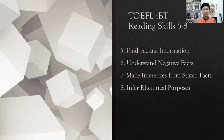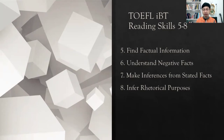Reading skill seven is making inferences from stated facts. Inferences are another word for conclusions or deductions, so in this skill we're going to learn how to draw a conclusion from the reading passage. And then the last skill, reading skill eight, is inferring rhetorical purposes — the reasons why the author writes certain sentences. We're going to learn how to identify the rhetorical purposes of the writer.